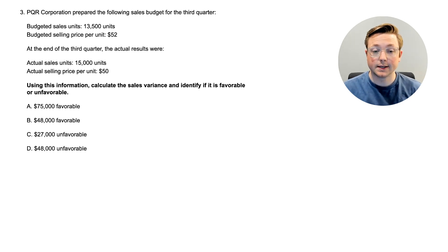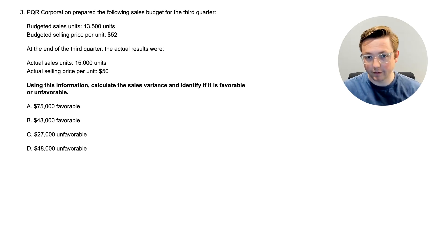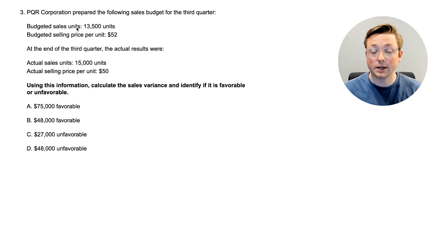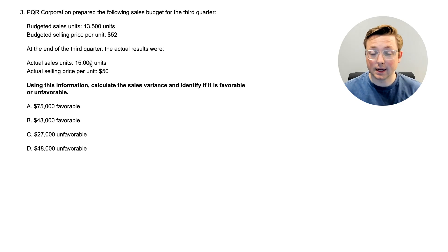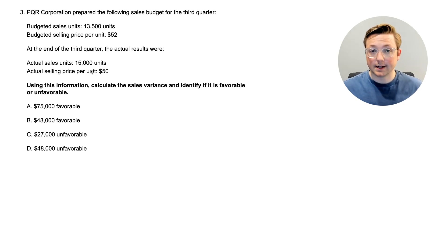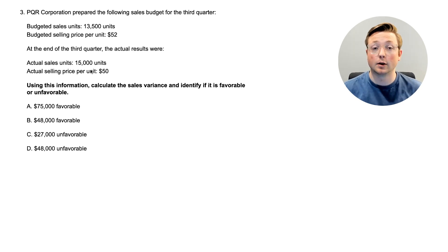Here we are at question three: calculate the sales variance and identify if it is favorable or unfavorable. The sales budget for the third quarter was 13,500 units budgeted to be sold at $52 each. The actual results were that they sold 15,000 units instead of 13,500, but at $50 per unit instead of $52. We're not doing a super deep dive — think of this simply. Pause the video if you need to, do the calculation, and come back.